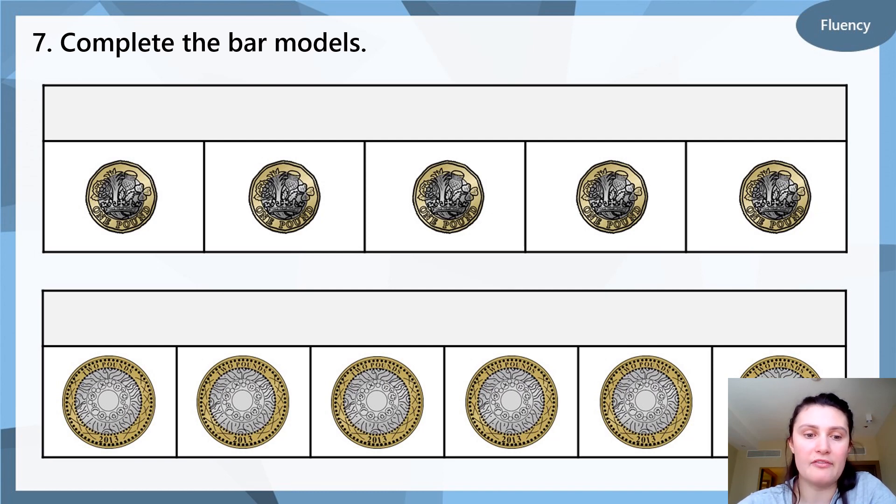Okay, here we have question 7. We need to count the value of the coins and write the answer above to complete the bar model. So for the first question, we need to count how many pounds and we need to write it. I want you to practice writing the pound sign as well, so make sure you've included the pound sign. For the second part, these are all 2p coins, so you're going to have to count in 2s and find out how many pounds there are to complete the bar model. Pause the video now while you finish question 7.